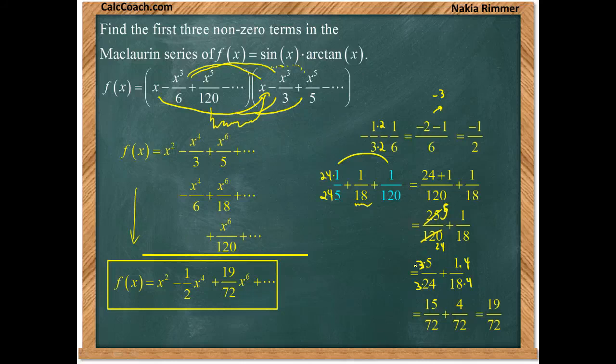They wanted the first three non-zero terms so we are done. That is our answer: x squared minus one half x to the fourth plus 19 over 72 x to the sixth.